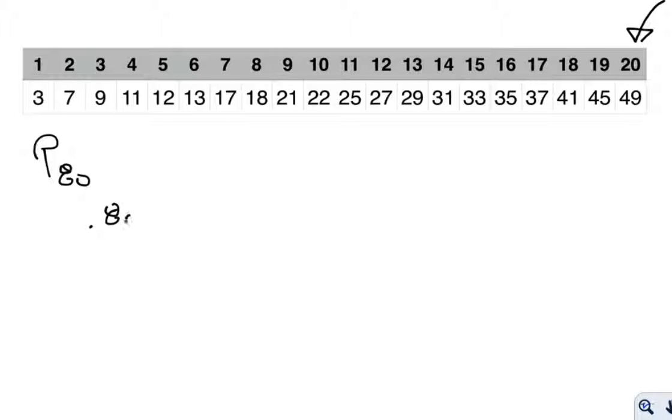So I'll take 0.80, multiply it by N, which is 20, and when I do I get 16. Now notice that's an integer.